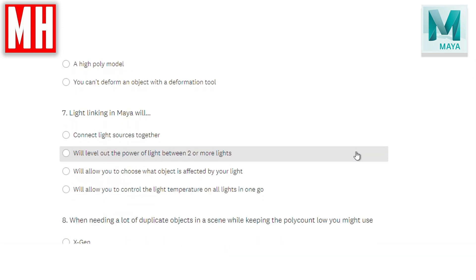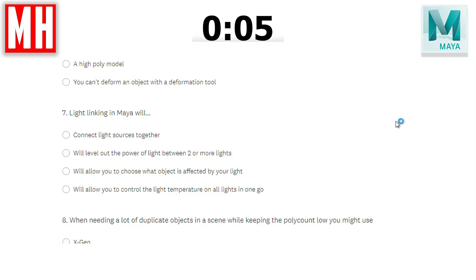Question number seven: light linking in Maya — will it connect light sources together, level out the power of light between two or more lights, allow you to choose what object is affected by your light, or allow you to control the light temperature on all lights in one go? The correct answer is C — it will allow you to choose what object is affected by your light. For example, you can set up a light linking system so that a light bulb mesh is not affected by a light, allowing the light to go outside the mesh.